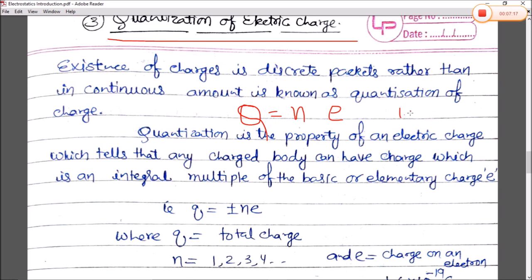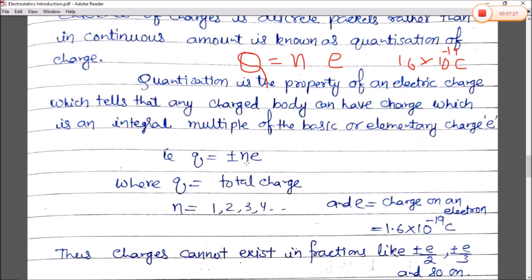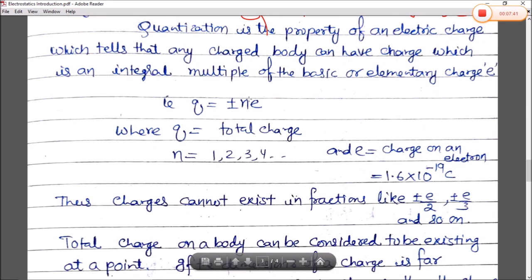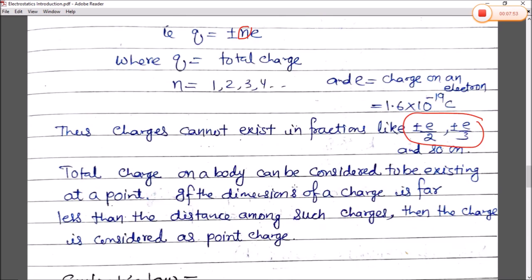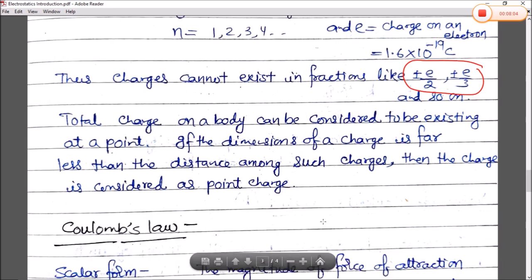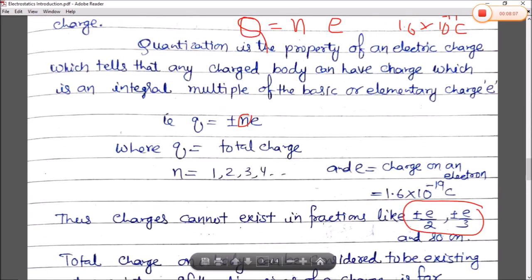The elementary charge e is 1.6 × 10⁻¹⁹ Coulomb. So we can write q = ±ne, where q is the total charge, n is an integer (1, 2, 3, 4...), and e is the charge on an electron, 1.6 × 10⁻¹⁹ C. Since n is an integer, charges cannot exist in fractions like e/2 or e/3. The total charge on a body can be considered to exist at a point — if the dimension of a charge is far less than the distance among such charges, it is considered a point charge. This is the important relation: q = ne.